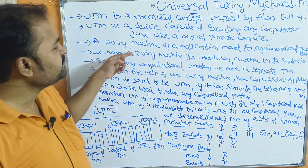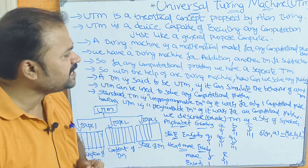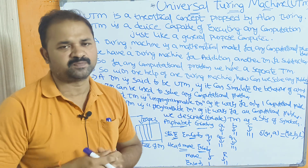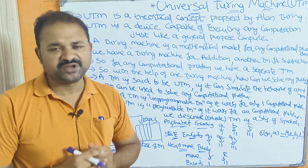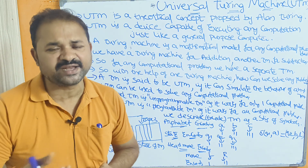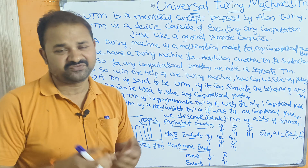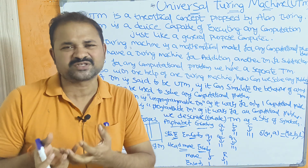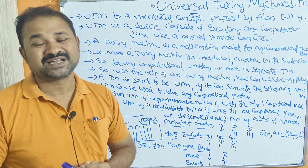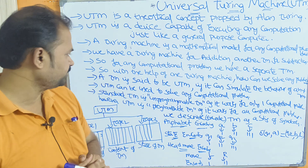A Turing Machine is a mathematical model for any computational problem. In order to solve any problem, first we need to follow some mathematical model, and that mathematical model is nothing but the Turing Machine.